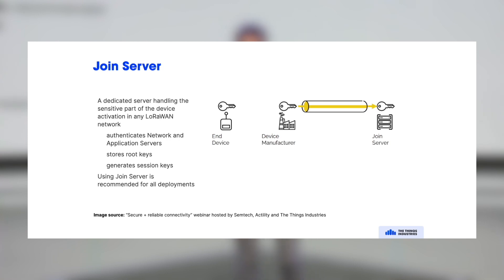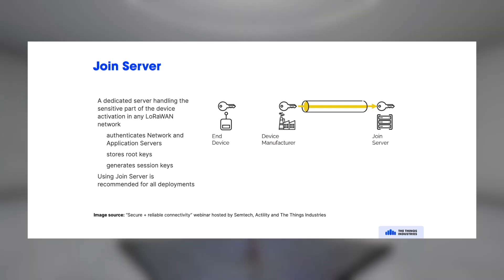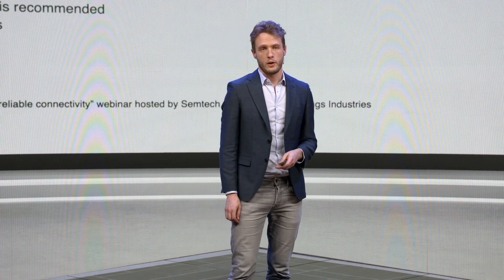A join server is a dedicated server for handling the sensitive part of the activation procedure on a LoRaWAN network. It authenticates the network server and application server, provides secure storage of root keys — typically using a Hardware Security Module (HSM) — and generates session keys, then distributes them to the authorized network server and application server. This is the recommended way of securing LoRaWAN.